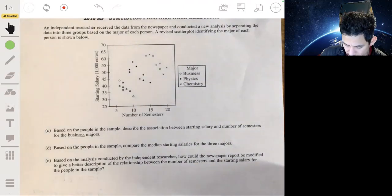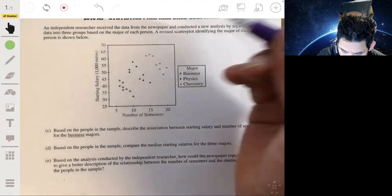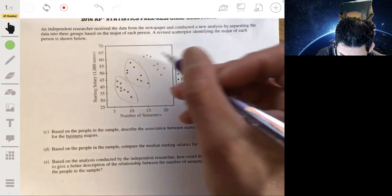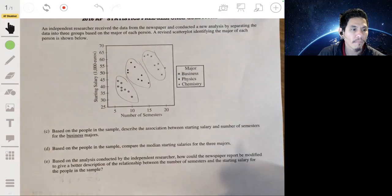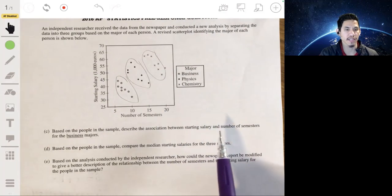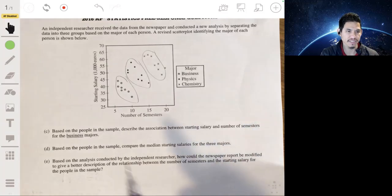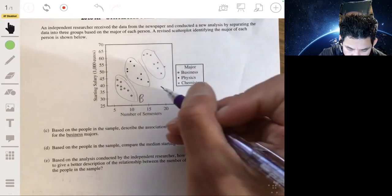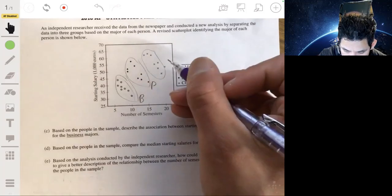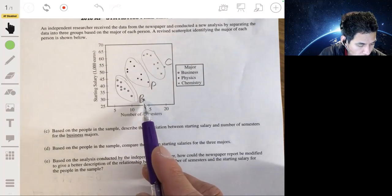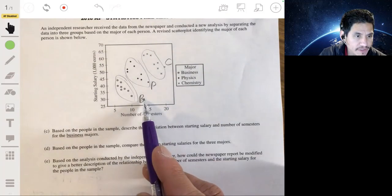Okay. So here we can see the business majors over here and the physics in the middle and the chemistry up here. So based on the people in the sample describe the association between starting salary and the number of semesters for business majors. So focusing on this group, what would it be here for business? B for physics and C for chemistry. So you're just only caring about this group.